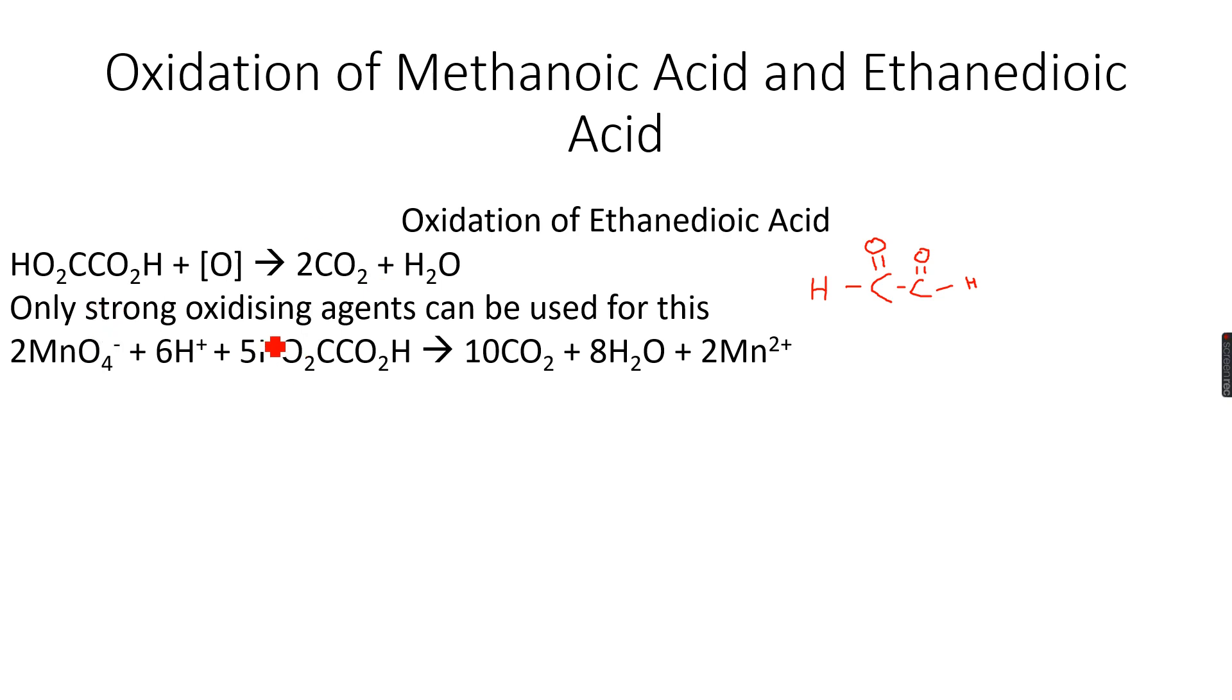And for this, the only difference is that we need to use strong oxidizing agents because it needs a strong oxidizing agent. It cannot be oxidized by the Tollens and Fehling's reagents because it has two acid groups, so it needs a stronger oxidizing agent. And as the strongest oxidizing agent we have used in our AS and A levels is potassium manganate, KMnO4. So we often use KMnO4 as an oxidizing agent and it can be used to oxidize ethanedioic acid.